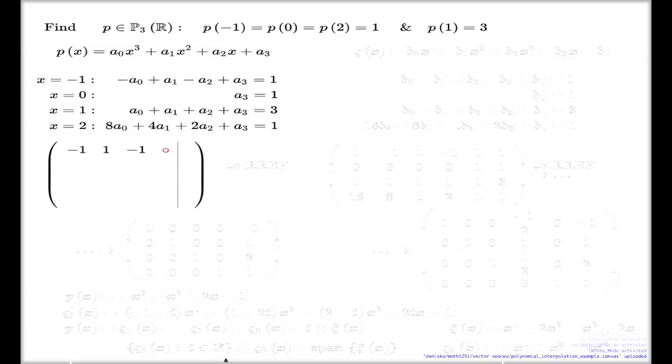It's a relatively large matrix, so I will open it slowly. Here's my coefficients: 1, -1, 1, -1, and 1 on the right hand side; 0, 0, 0, and 1 is the second row; third row 1, 1, 1, 1, and 3.